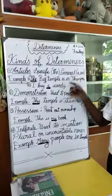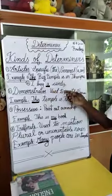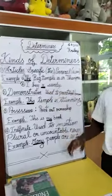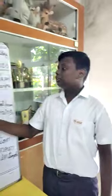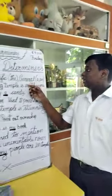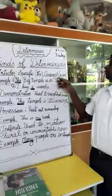Then again, general. I buy a candy. Here, I am referring to a candy. I didn't tell the flavor or which company the candy belongs to. So, this is a general article.